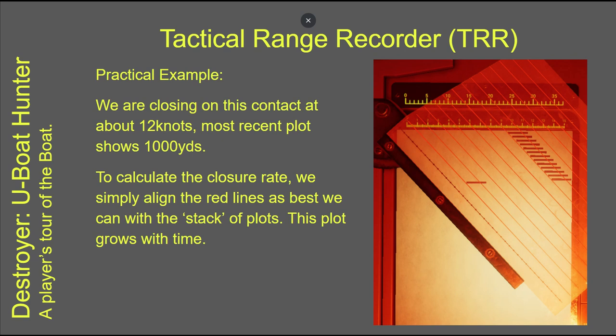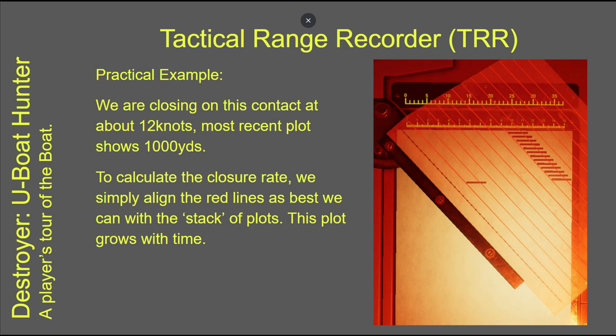Doing this, we would have a result of about seven knots. You can see, however, that in a more practical example the closure rate changed — which means the target changed speed or course, or perhaps we did. We'll now have to readjust the plot. What I would then do is tilt the plexiglass to match the new trend for the stack. So we forget all the previous data and go with the most recent data.